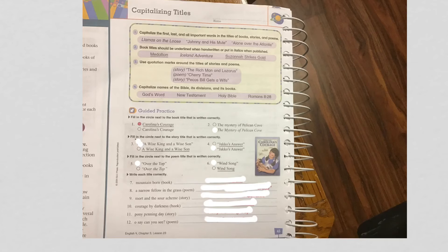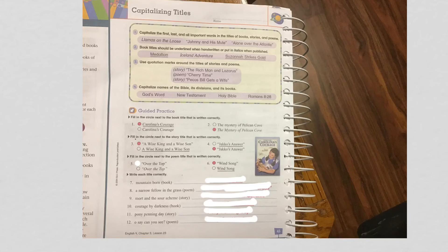So we're going to pick that one. Number two is not underlined, but it is in italics. So we're going to mark that one. Number three, fill in the circle next to the story title that is written correctly. A story title gets quotation marks. And here's the one with quotation marks — it doesn't say underlined. And then fill in the circle next to the poem title. Poems get quotation marks. It doesn't say to underline or use italics. So those are pretty self-explanatory.